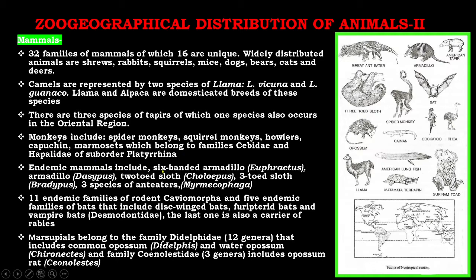Xenarthran mammals include six-banded armadillos, Euphractus and Armadillo decemcinctus, and two-toed sloth Choloepus and three-toed sloth Bradypus. There are three species of anteater, Myrmecophaga. There are also 11 endemic families of rodents (Caviomorpha) and five endemic families of bats, which include disc-winged bats, funnel-eared bats, and the vampire bat Desmodus rotundus.